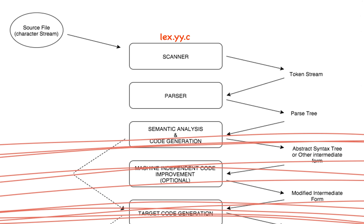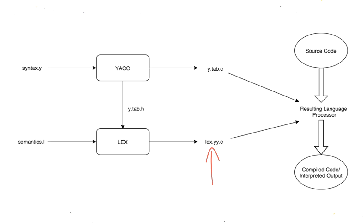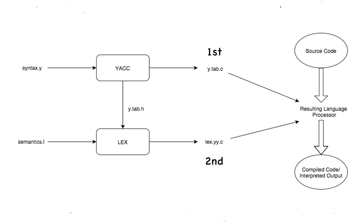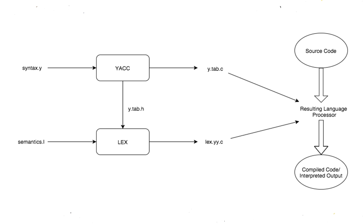To summarize: the source file is passed through the scanner which tokenizes the input. These tokens are passed into a parser which generates the parse tree and checks for grammar errors. We then perform semantic analysis using the parse tree to ensure compatible data types. The scanner is lex.yy.c and the parser is y.tab.c. lex.yy.c is created from the Lex file using the Lex tool, while y.tab.c is created from the YAC file using the YAC tool. The YAC tool also generates a header file y.tab.h which is used by Lex to generate lex.yy.c, so we need to first generate the parser and then the scanner. Now that you know how Lex and YAC work, we're going to install and work with them in the next video.